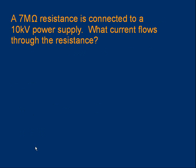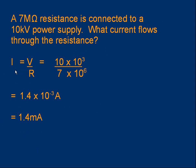Another one. A 7 megaohm resistance is connected to a 10 kilovolt power supply. What current flows through the resistance? Pause the video and try this. This time we use I equals V over R because we're trying to find the current I. V is 10 kilovolts, 10,000 volts, 10 times 10 to the 3. The resistance is 7 megaohms, which is 7 million, 7 times 10 to the 6 ohms. And when we do the calculation, the answer is 1.4 times 10 to the minus 3 amps, or in a slightly more convenient format, 1.4 milliamps.